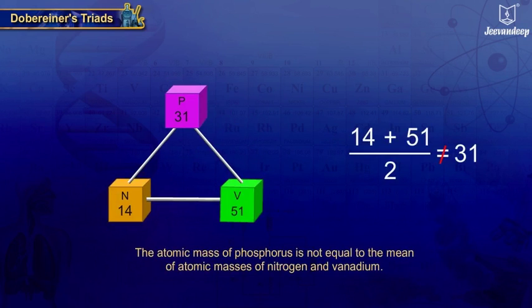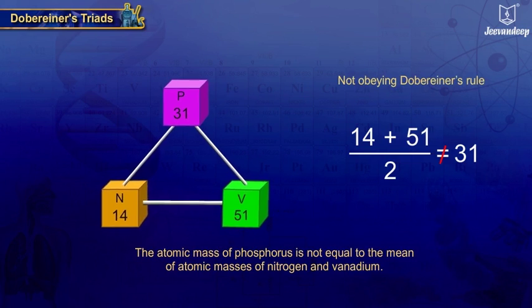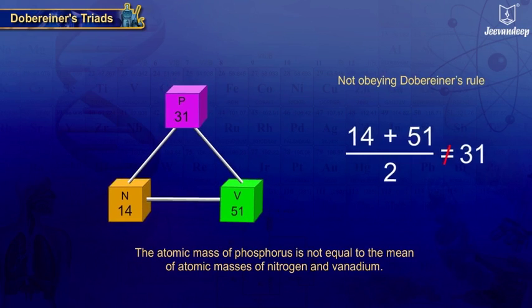Dobereiner's system of triads was not successful as he could identify only some triads from the elements known. Other triads did not obey Dobereiner's rule.